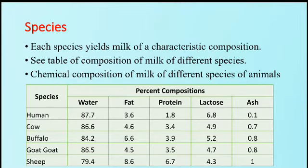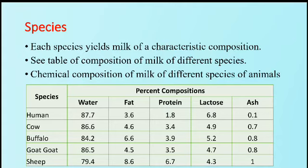The first factor is species. Each species yields milk of characteristic composition. Looking at the table of composition of milk of different species, we can see the chemical composition of milk across different animal species. There is variation in water, fat, protein, lactose, and ash percentage, which is somewhat higher or lower in some species.